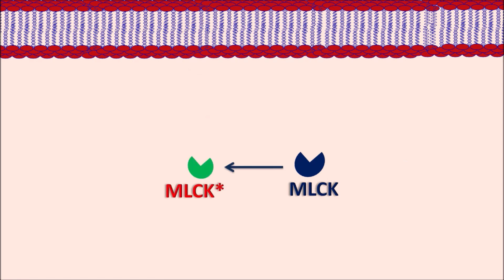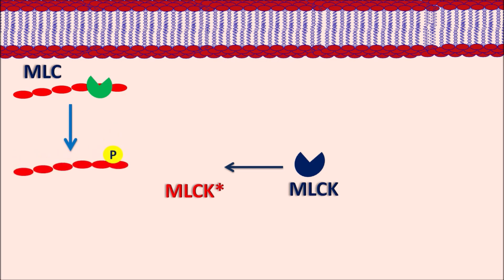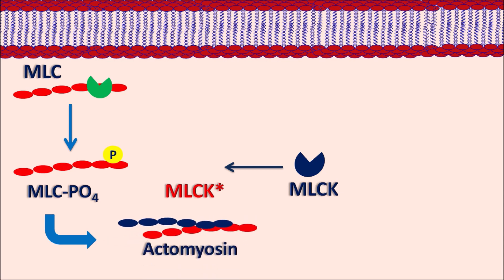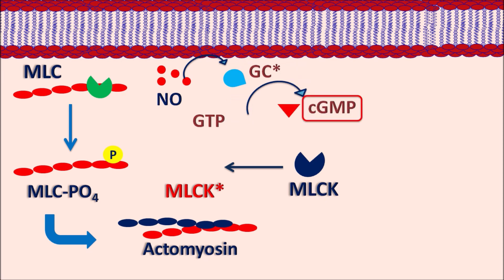Within the corpus cavernosum, relaxation is mediated by the MLCK mechanism — myosin light chain kinase. MLCK should be activated, and it then acts on myosin light chains (MLC) to produce phosphorylation of these chains into MLC-phosphate. This MLC-phosphate binds to actin to form an actomyosin complex, which slides to produce contraction of smooth muscle. Nitric oxide controls this contraction by stimulating guanylyl cyclase (GC), which converts GTP into the secondary messenger cyclic GMP. Cyclic GMP promotes inactivation of MLCK by converting it into its phosphorylated (inactive) form.